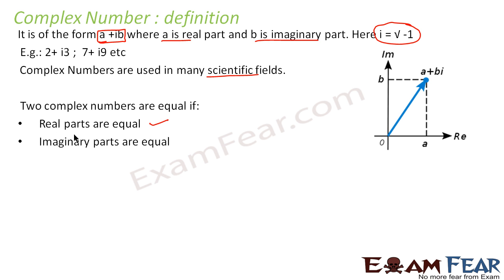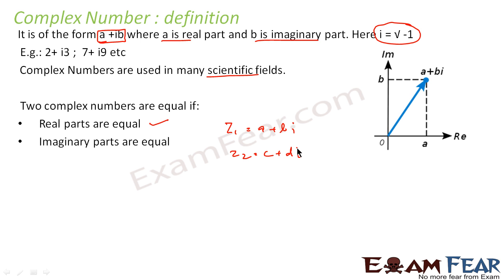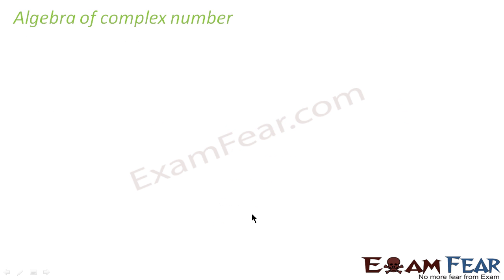Two complex numbers are equal only if their real parts are equal and their imaginary parts are equal. For example, if z1 equals a plus bi and z2 equals c plus di, then z1 equals z2 implies a equals c and b equals d.